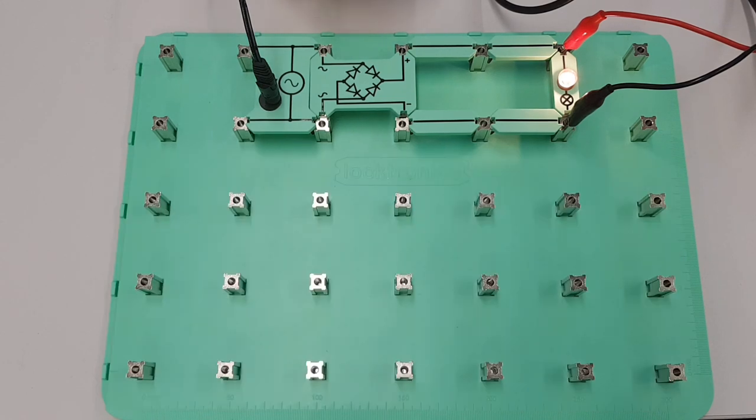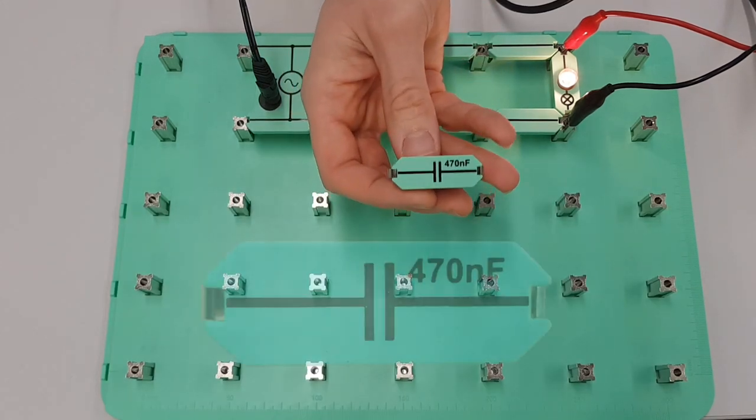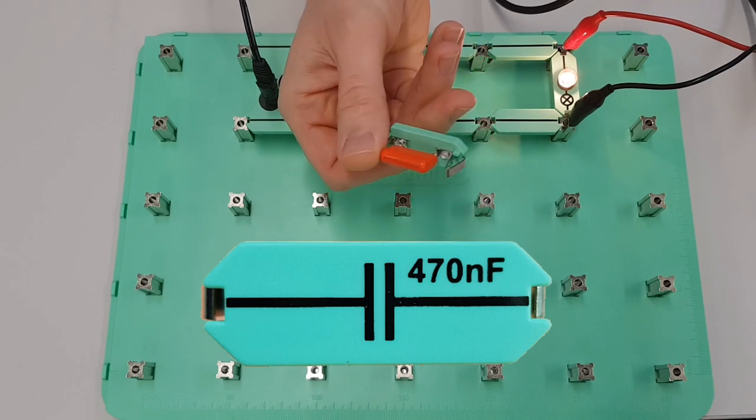We want to get it nice and smooth, and the way we achieve that is by introducing a capacitor into the circuit. Now this is a capacitor that I've got here. This is the symbol for a capacitor.